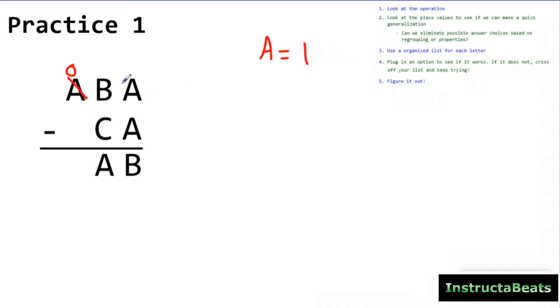Now I'm going to look at my place values. I'm going to look right here at my one's place. And even if I didn't know what A is, which I do, I know it's one. I know that any number minus itself has to be zero. So that means B has to be zero. So I already know that A is one and B is zero. And I haven't even had to make an organized list yet. Just because I looked at the operation, I thought about the regrouping, and I made some quick generalizations about the numbers.